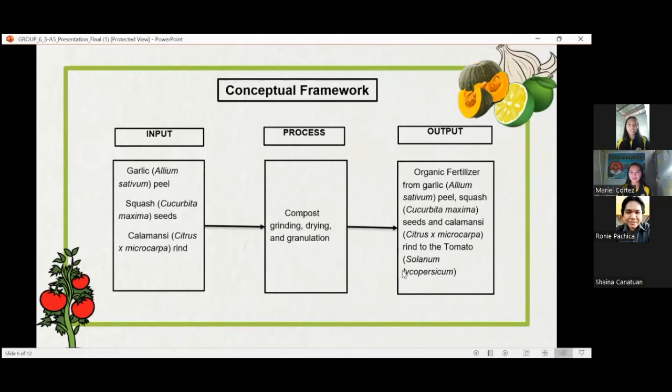Conceptual framework. The input is the garlic Allium Sativum peel, squash Cucurbita Maxima seeds, and calamansi Citrus X Microcarpa rind. The processes are composting, grinding, drying, and granulation of the input. Then the output is the organic fertilizer from garlic Allium Sativum peel, squash Cucurbita Maxima seeds, and calamansi Citrus X Microcarpa rind to the tomato Solanum Lycopersicum.